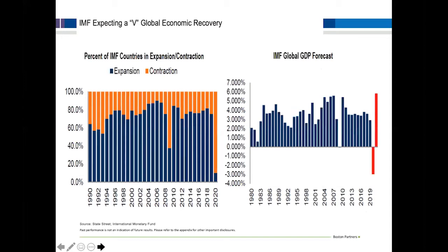From a global standpoint, the IMF follows 189 different countries worldwide. As of their last report put out last week, in excess of 90% of those countries were in some form of economic contraction, compared to expansion — significantly more detrimental than 2008. Their GDP forecast shows roughly down 3% for global GDP for 2020, and then a V-shaped rebound of over 5% for 2021. I'm a little suspect of both those numbers — a little light on the downside for 2020 and a little too aggressive on 2021.